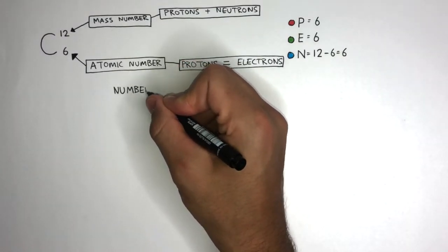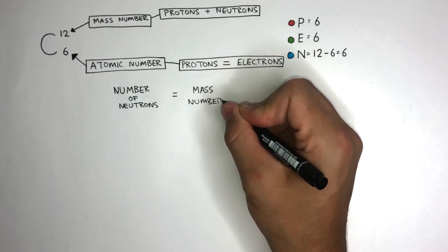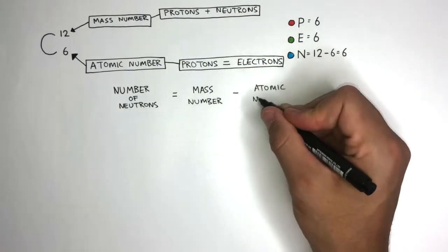Make sure you always use this equation when calculating the number of neutrons. Just to reiterate, it's mass number take away atomic number.